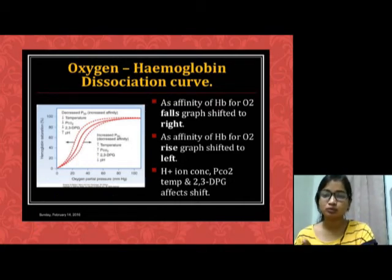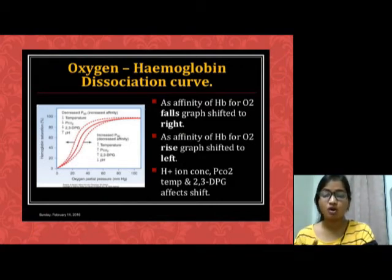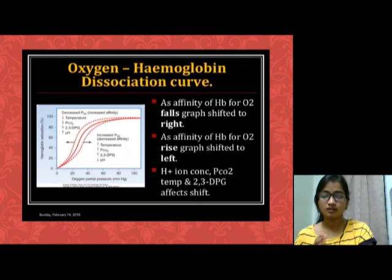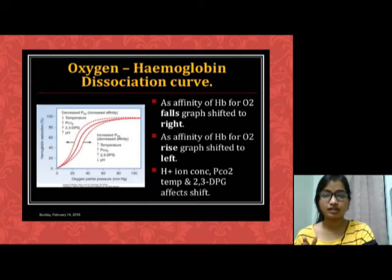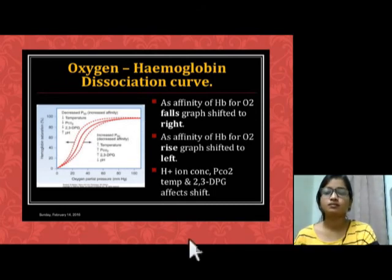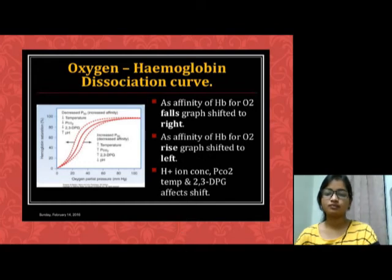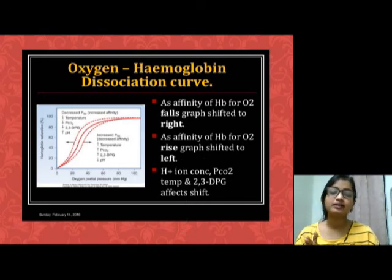As the affinity of hemoglobin for O2 falls, the graph shifts to the right. This means if oxygen concentration is less, and H+ ion concentration is more, and carbon dioxide is more, our sigmoid graph shifts to the right. As the affinity of hemoglobin for O2 rises, the graph shifts to the left. This means if O2 concentration is more, and H+ ion, carbon dioxide, and temperature are less, then the sigmoid curve shifts to the left side.